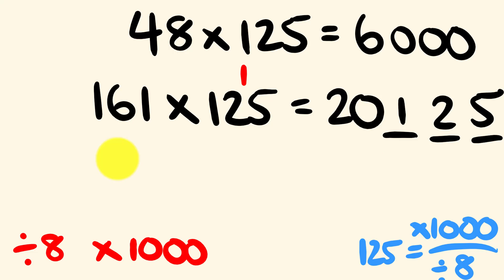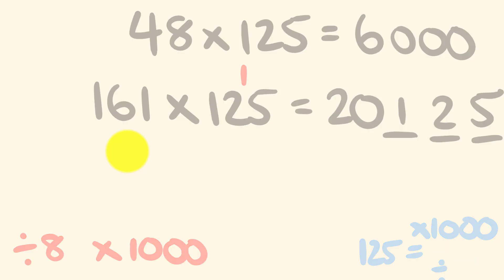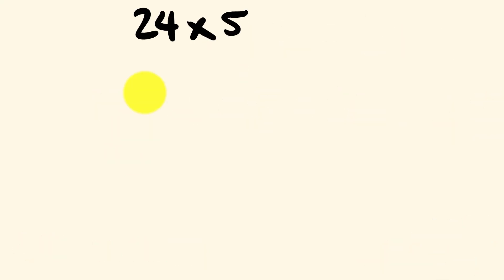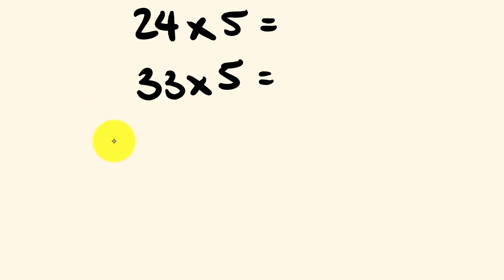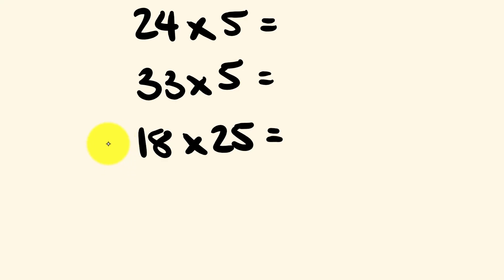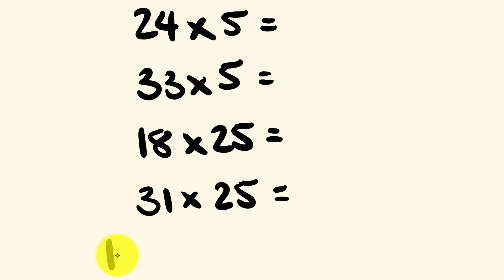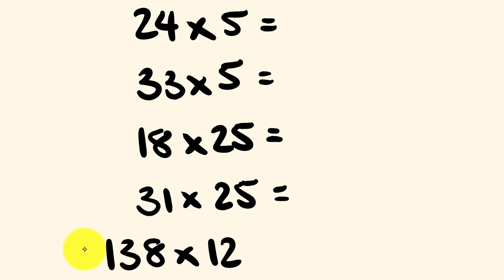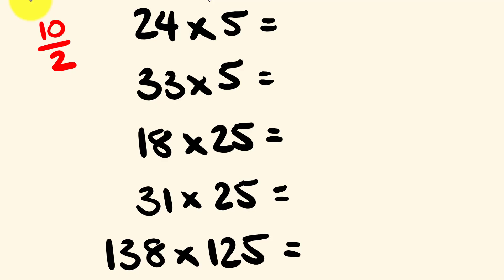Now let me give you five practice problems. We have 24 multiplied by 5, 33 multiplied by 5, 18 multiplied by 25, 31 multiplied by 25, and 138 multiplied by 125. Are you giving these a go? For numbers multiplied by 5, that's 10 divided by 2 — so divide by 2 then multiply by 10. 24 divided by 2 is 12, multiplied by 10 gives 120.